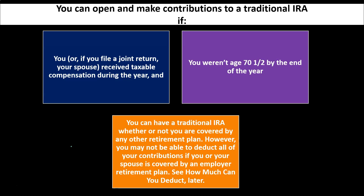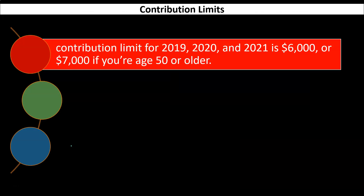You can have a traditional IRA whether or not you are covered by any other retirement plan. However, you may not be able to deduct all your contributions if you or your spouse is covered by an employer retirement plan. The IRA is basically put in place for those who don't have access to a 401k plan, so it starts to be limited if you have access to one. The IRS is trying to give you an incentive to take money aside, put it into a locked retirement account, and penalize you for taking it out early until retirement.